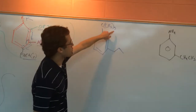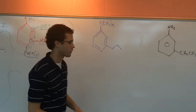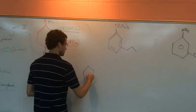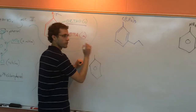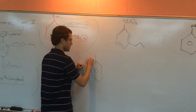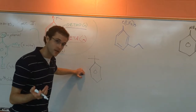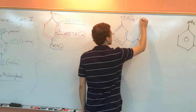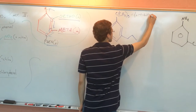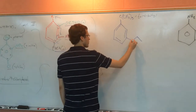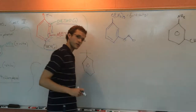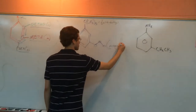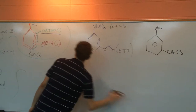Now we have a carbon with three CH3 groups attached. Let's draw it out: we have our benzene and we have a carbon with three other carbons attached — that's just a t-butyl group. And this other group — one, two, three straight in a row in a chain — this is just going to be a propyl group.